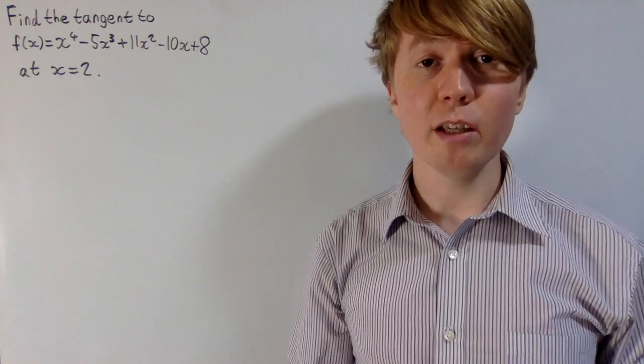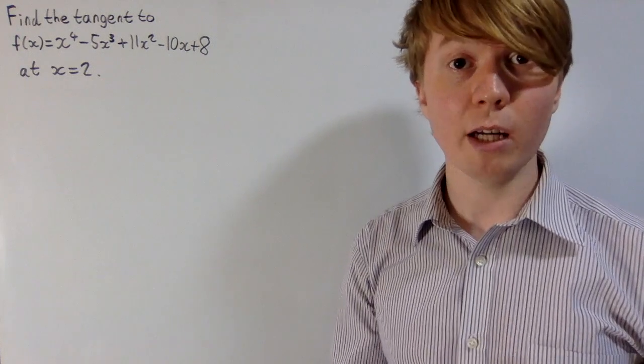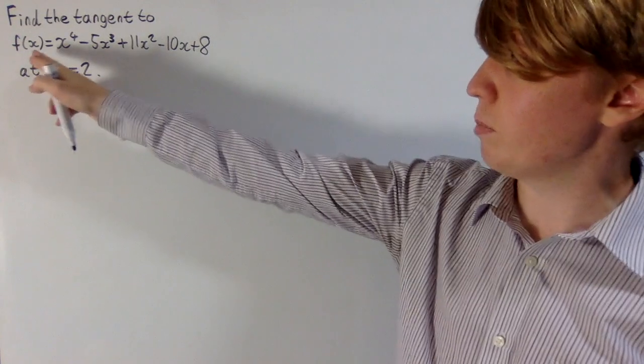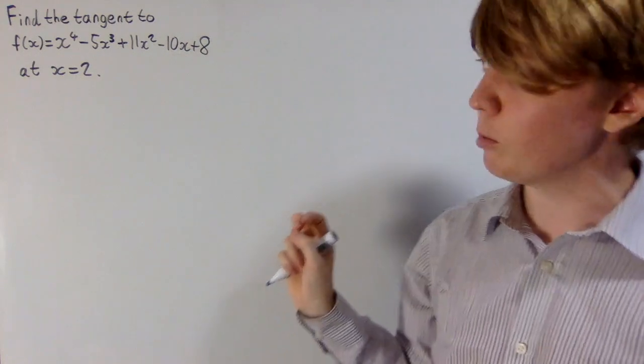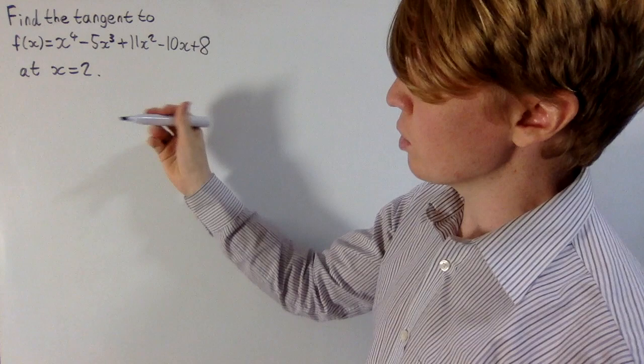Okay, so we're going to have a look at a really nice way of finding the equation of a tangent to a polynomial at a given point without actually using any calculus whatsoever. So basically the idea is you've got some polynomial, we'll work through this example to begin with, f of x, a quadratic polynomial, and at the point x equals 2.